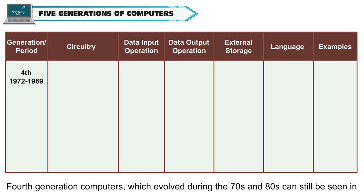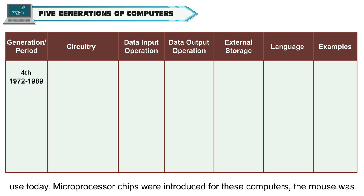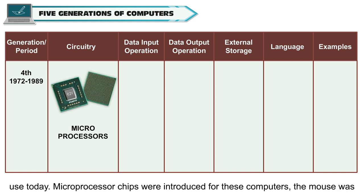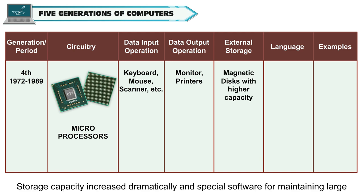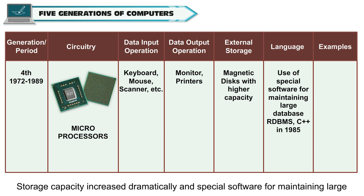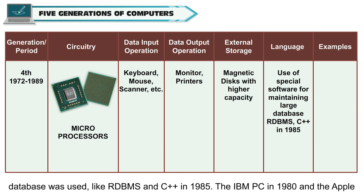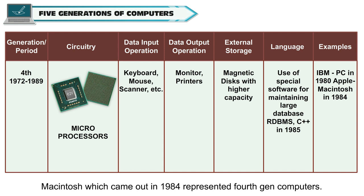Fourth generation computers, which evolved during the 70s and 80s, can still be seen in use today. Microprocessor chips were introduced for these computers. The mouse was added as an input device and printers for output. Storage capacity increased dramatically and special software for maintaining large databases was used, like RDBMS and C++ in 1985.